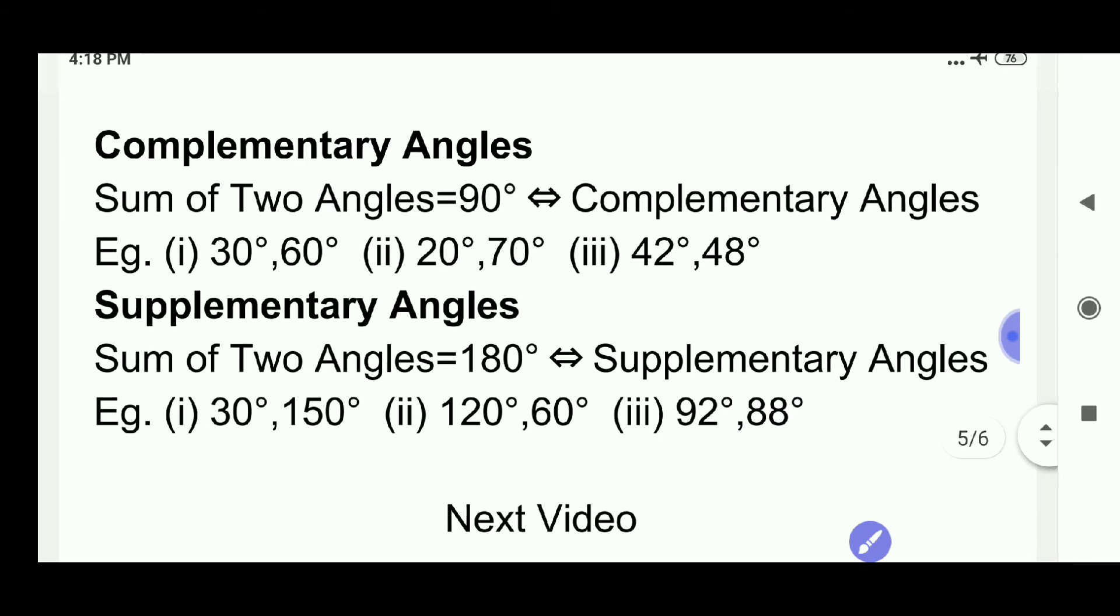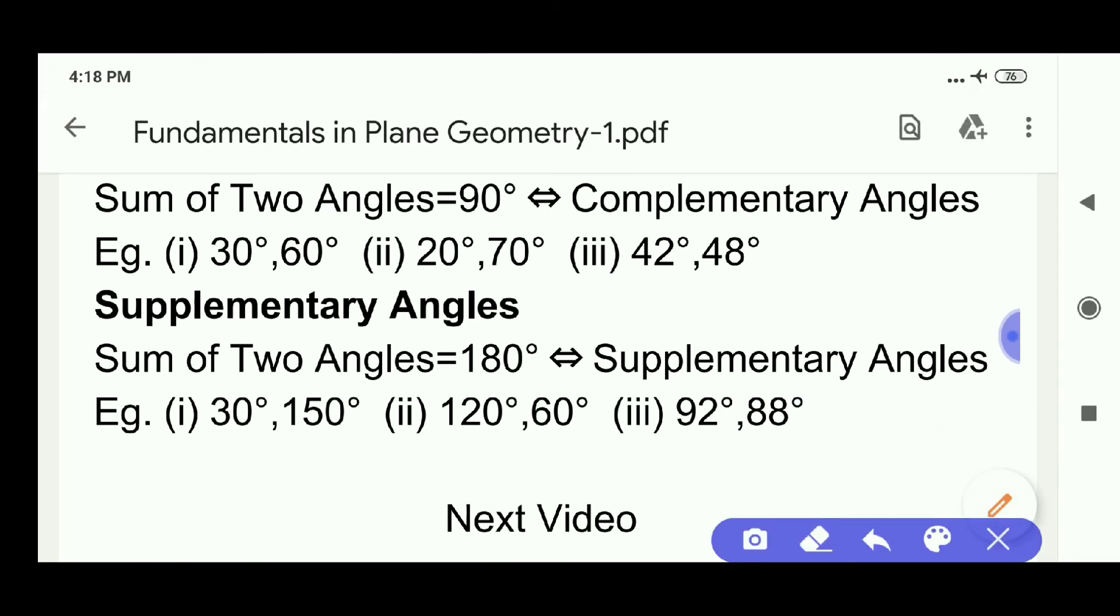Supplementary angles. Sum of angles is 180 degrees bi-implies supplementary angles. 30 degrees and 150 degrees are supplementary angles. Supplementary angle of 120 is 60 degrees. Supplementary angle of 88 degrees is 92 degrees.